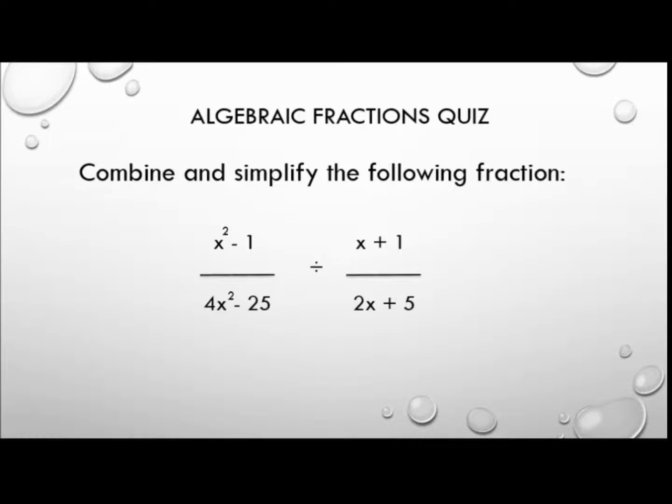So in this question we are asked to simplify x squared minus 1 over 4x squared minus 25, all divided by x plus 1 over 2x plus 5. Good luck with that. Take your time. Pause the video, and I'll be ready with the answer when you press play.